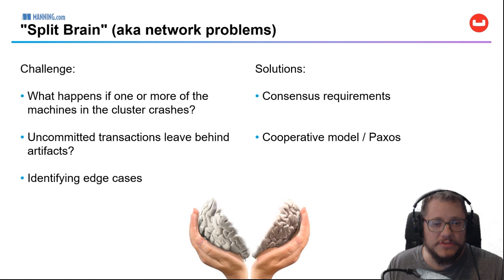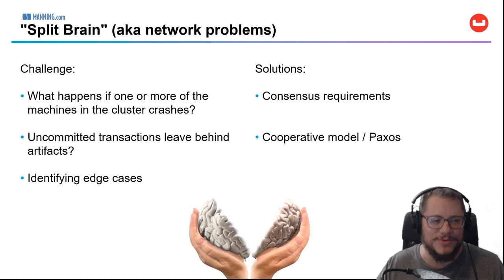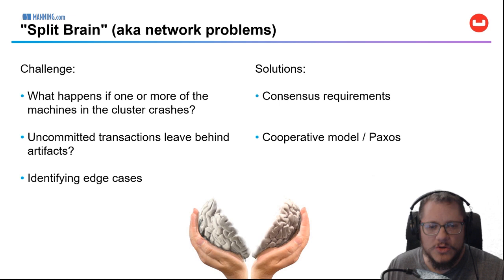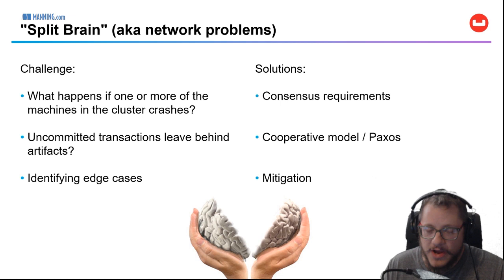Network goes down, network goes down temporarily, network goes down at T equals one, T equals two, T equals three — all those things could be different edge cases. How do we deal with all of those? This is true for relational databases and even more so for distributed systems introducing the network. The way to deal with this is to mitigate it: identify the edge cases, test for them, plan for them, expect them, and deal with them.